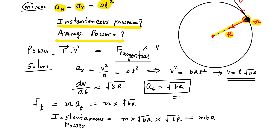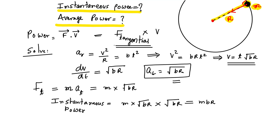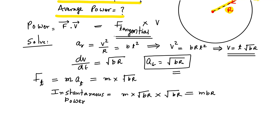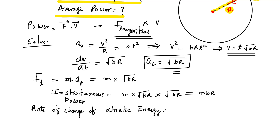Now the next part is average power. Average power is the rate of change of kinetic energy — that is, the total change in kinetic energy divided by time.